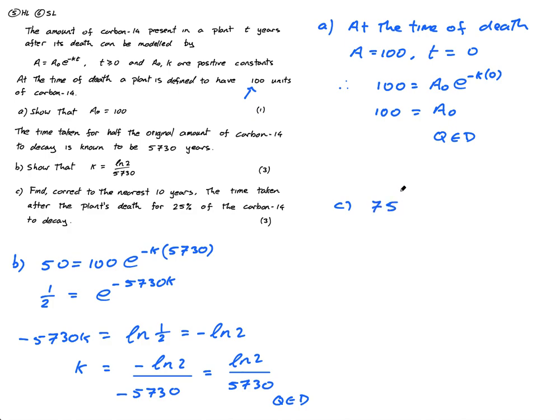25% has decayed. A0 is 100. And K, I now know to be ln of 2 over 5,730. So it's negative K ln of 2 over 5,730. And then this is T. So hang on, I thought that looked a bit strange. I forgot my E. Let me put that here. It's E to the power of this.